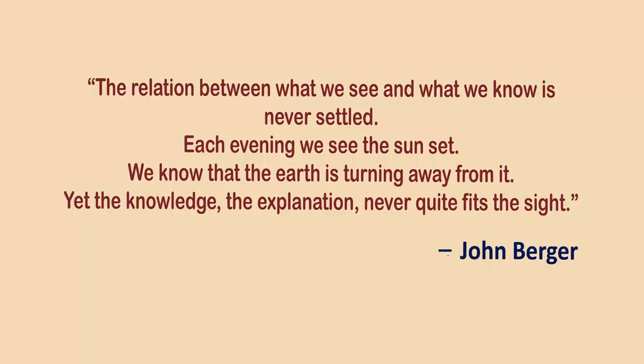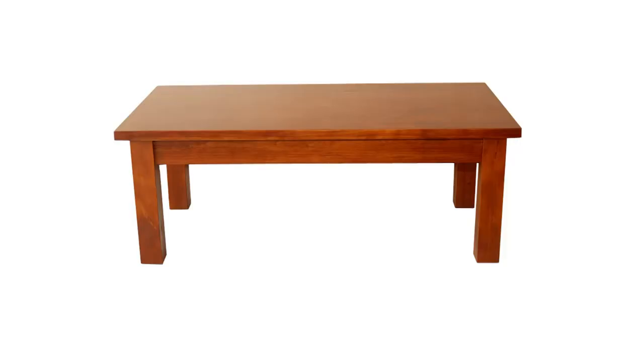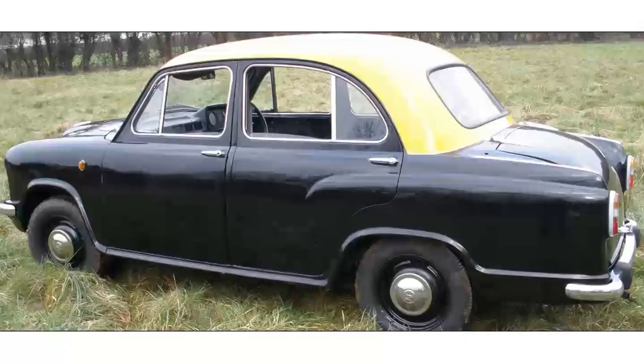Following John Berger, each evening we see the sun set, yet we know that the earth is turning away from it — the knowledge, the explanation, never quite fits the sight. Similarly, when you look at a photograph of a small table, you know very well that all four legs are of equal height, yet in the photograph the legs further away appear smaller than those closer to us — visual perception in conflict with our knowledge.